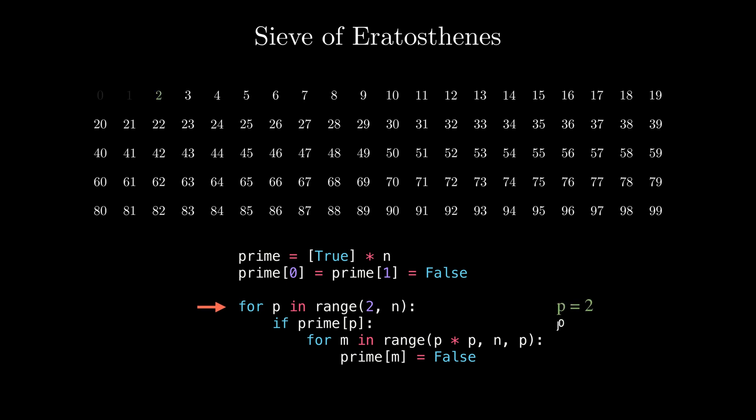On the first iteration, when the value of p is 2, we check if prime[2] is true. As it's set to true, we iterate over all the multiples of 2 and mark them with false. On the second iteration, p is 3, so we check if prime[3] is true. As its value is set to true, we iterate over all the multiples of 3 and mark them with false.